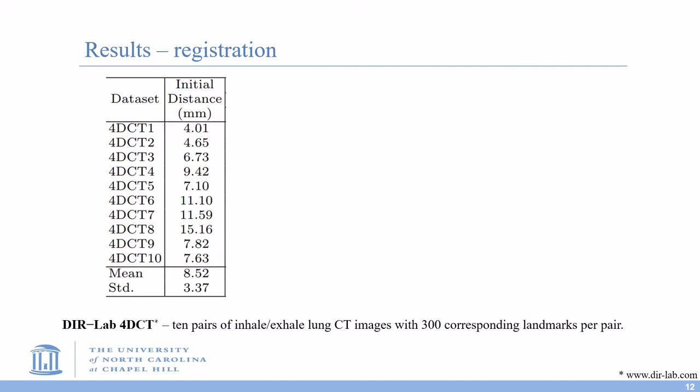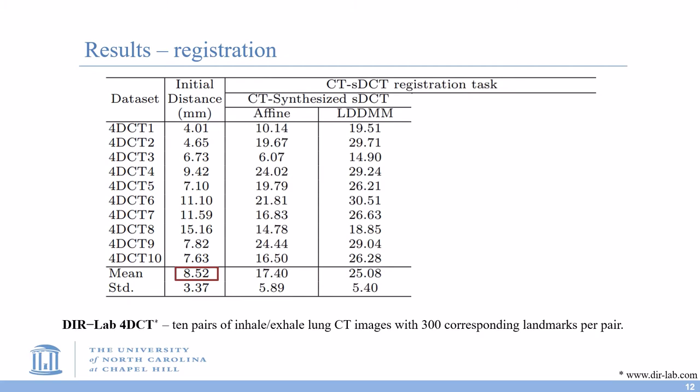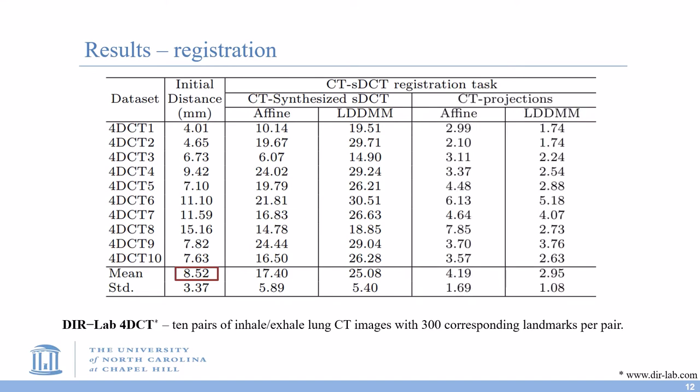The mean initial distance between landmarks on these 10 pairs is 8.52 millimeters. We first run the affine and LDDMM registration on CT and sDCT. The result shows that the registration in 3D space pushes the landmarks further away from each other. Then we run our proposed framework. The affine registration in our framework brings the landmark distance from 8.52 millimeters to 4.19 millimeters.